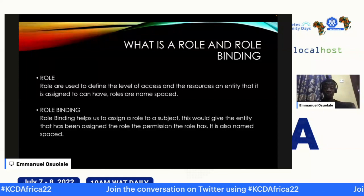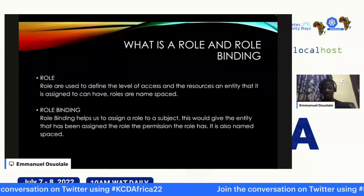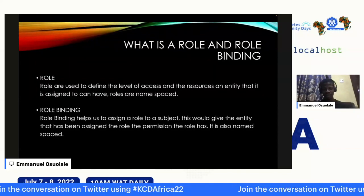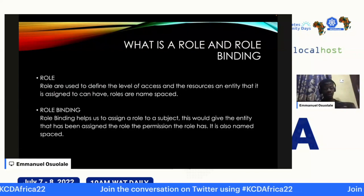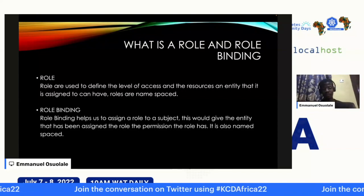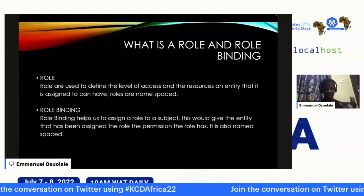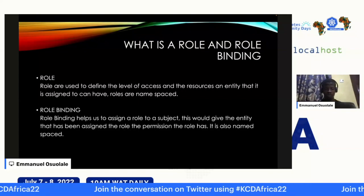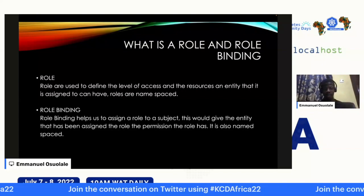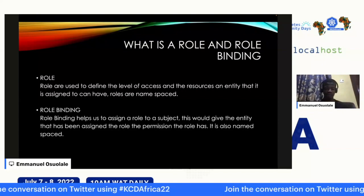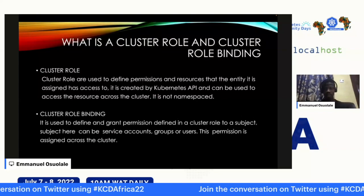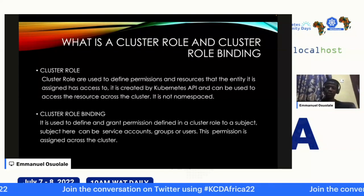Then we have roles and role bindings. Before a service account can perform optimally, it needs to be assigned a role and a role binding. A role is used to define the level of access and resources that an entity can access. Roles are namespaced. A role binding helps us assign a role to a subject — it can be a user, a group, or a service account — giving that entity the permissions defined by that role. It is also a namespace object.